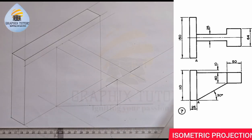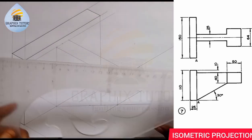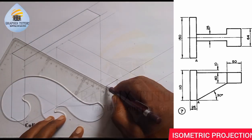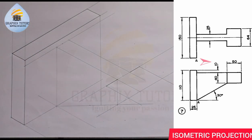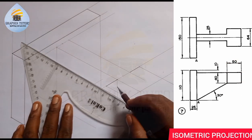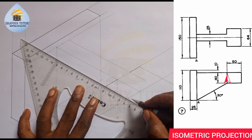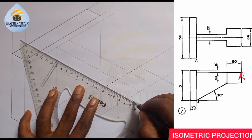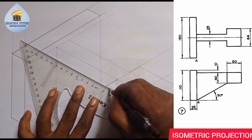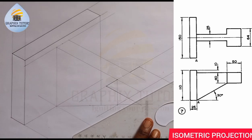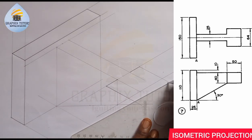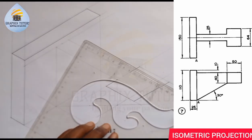I'll bring it out this way. The length of this is given as 50, from here to here. So I'm going to make it 50 from this point — where my arrow is pointing — to this point here: 50. Can you see that? I can easily take it to here, and I will close it up to this point, this way. I'll do the same thing here too, closing it up.